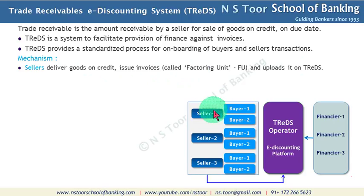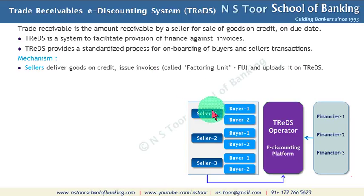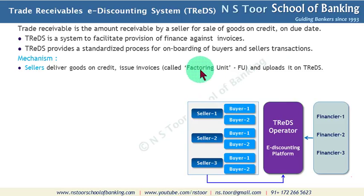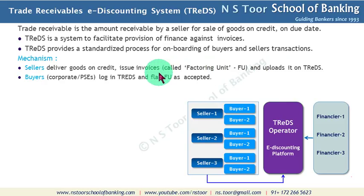For example, seller number 1 delivers goods to buyer number 1 or buyer number 2. Thereafter, the seller issues an invoice and uploads its details on TReDS. This invoice is known as a factoring unit.